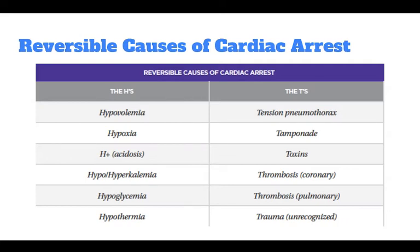The T's include tension pneumothorax, tamponade, toxins, thrombosis coronary, thrombosis pulmonary, or trauma.